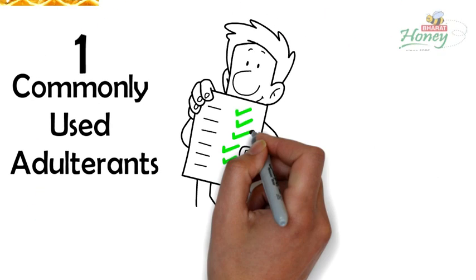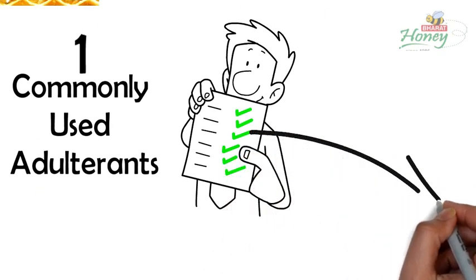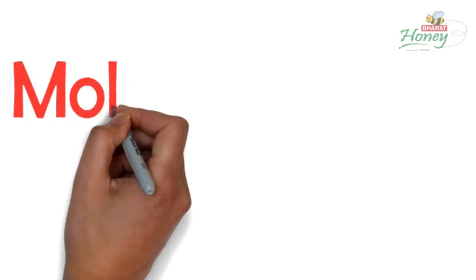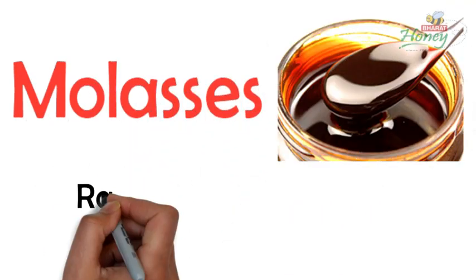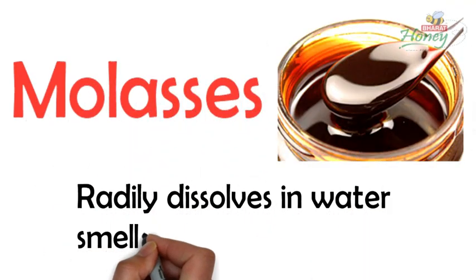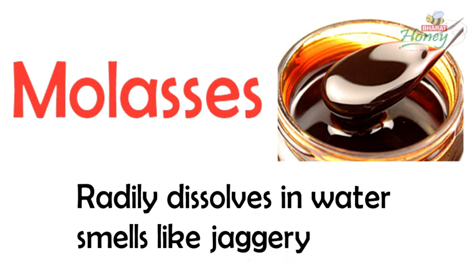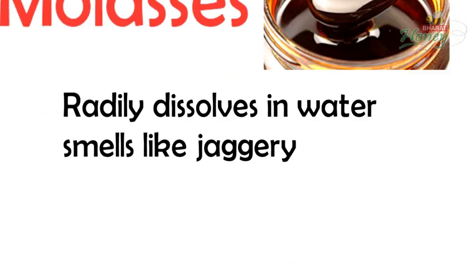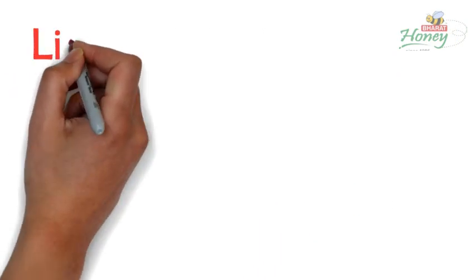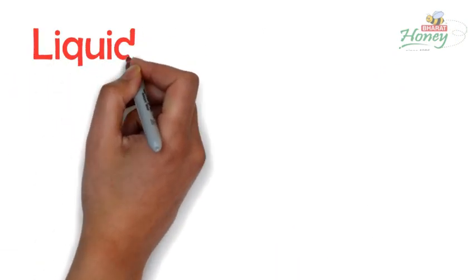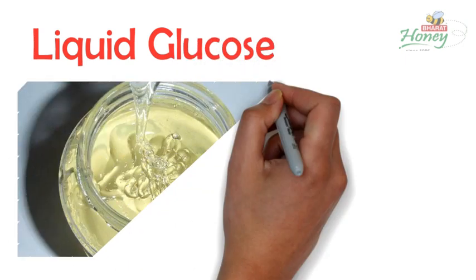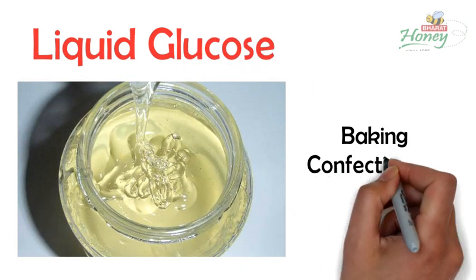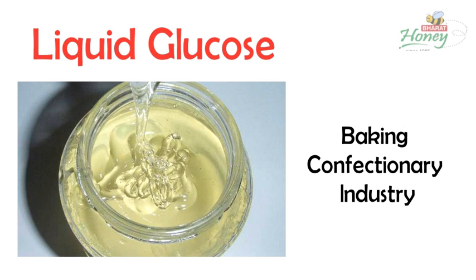Let's first start with the most commonly used adulterants. In early days, molasses was the common adulterant but it is no longer in use because it readily dissolves in water and smells like jaggery. Another adulterant is liquid glucose, which is a thick and shiny solution made in factories and frequently used in baking and confectionery industries.